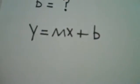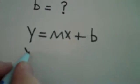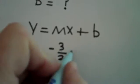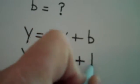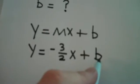You know that y = mx + b is the slope-intercept form of a line. In this particular problem, I know that m is -3/2. So I know that my line, the equation of this line, looks like this. But I don't know b.